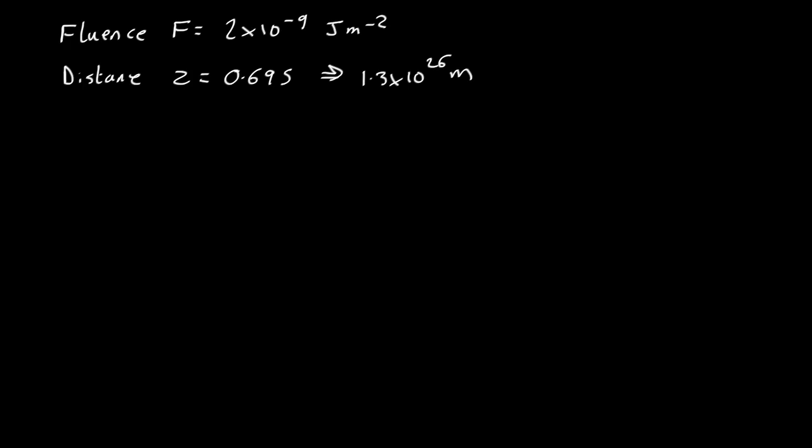Now, the fluence we received from this object, that's the total amount of energy per square meter on Earth, is 2 by 10 to the minus 9 joules per meter squared.